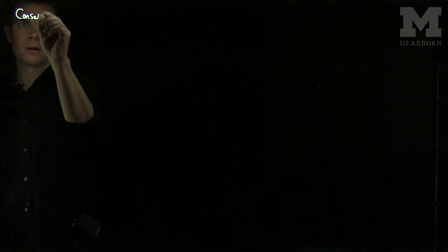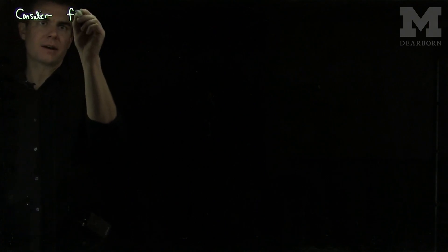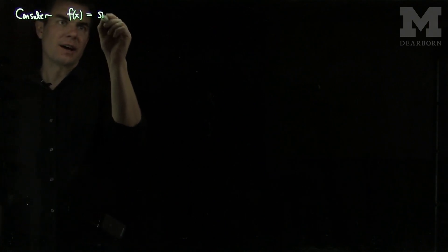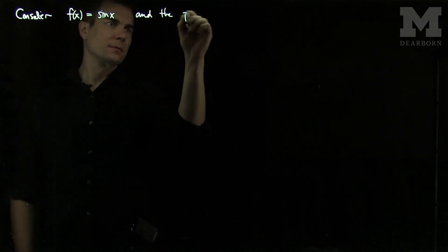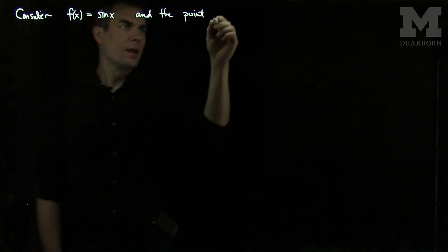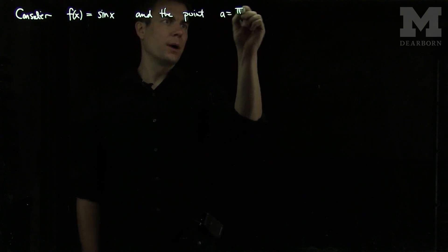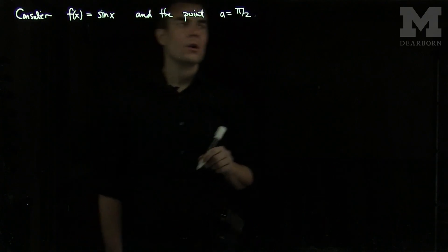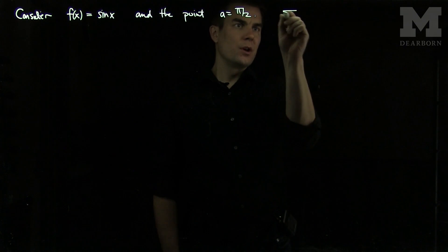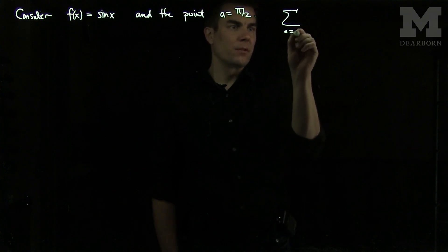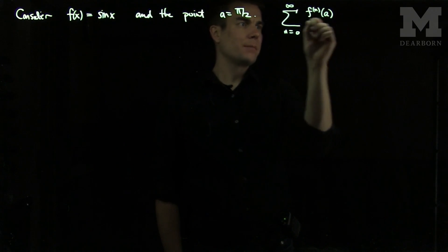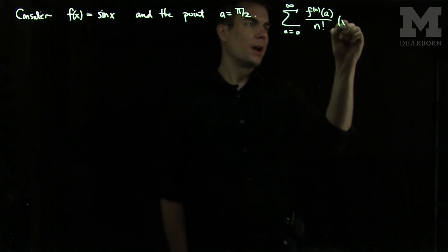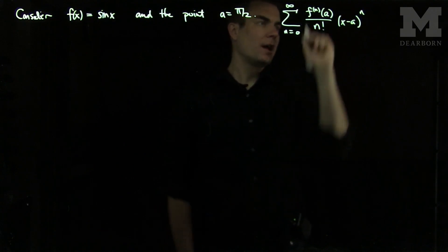Let's consider the function f which is sine of x, and the point a equals pi over 2. To compute the Taylor series, we know that the Taylor series expansion is the sum from zero to infinity of the nth derivative of the function at the point a over n factorial, times x minus a to the power n.